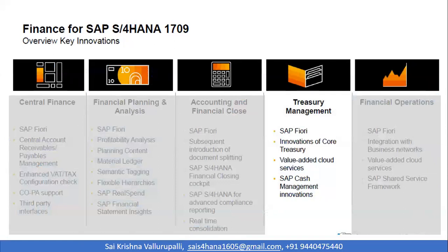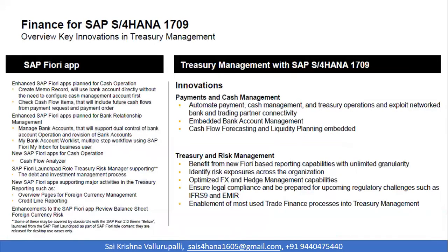Treasury management innovations have been brought in with SAP S4 HANA 1709. You can have treasury management as an on-premise or cloud version. The SAP cash management innovations are quite elaborate — you can create a memo record that uses a bank account directly without needing to connect to the cash management account list. When you have a bank account with historical transactions that you want to bring into the system, you can bring them in as a memo record for reporting or analysis purposes.